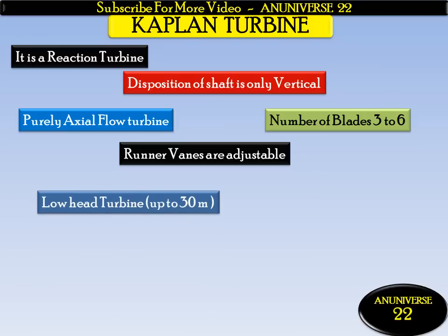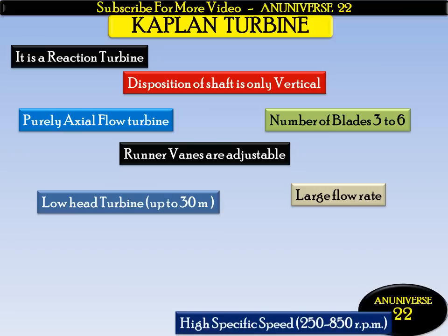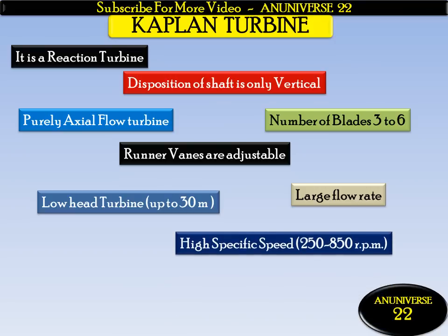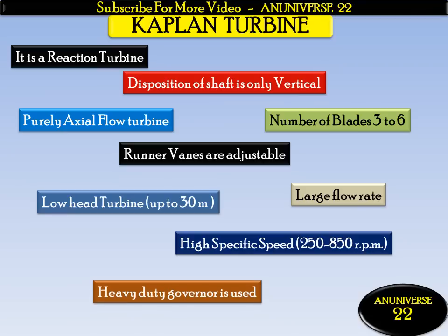It is a low head turbine, up to 30 meters, with a large flow rate and high discharge. It is a high specific speed turbine. The speed varies from 250 to 850 rpm, and a heavy duty governor is used for governing of this turbine.